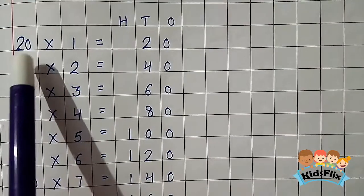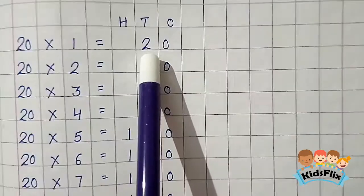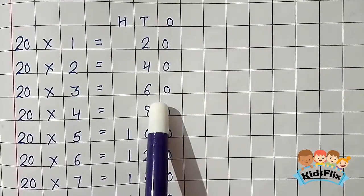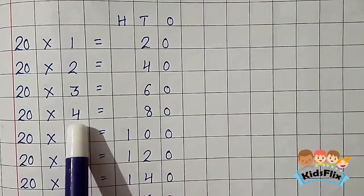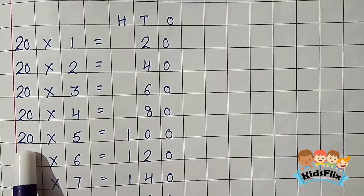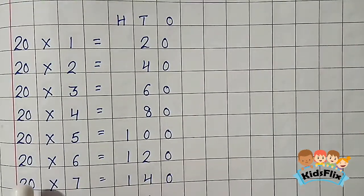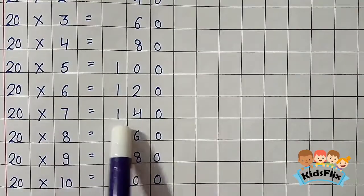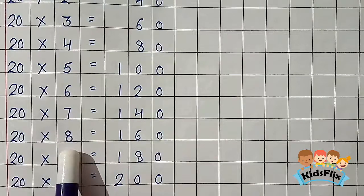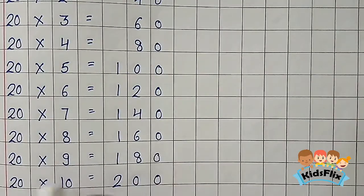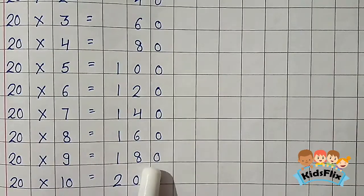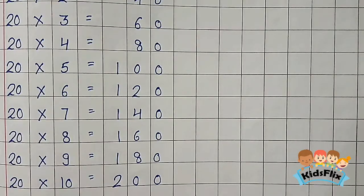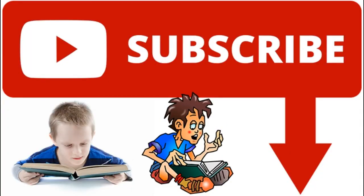Now the table of 20. 20 1s are 20. 20 2s are 40. 20 3s are 60. 20 4s are 80. 20 5s are 100. 20 6s are 120. 20 7s are 140. 20 8s are 160. 20 9s are 180. 20 10s are 200. Thank you for watching the video. Thank you.